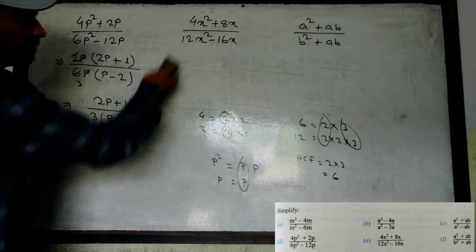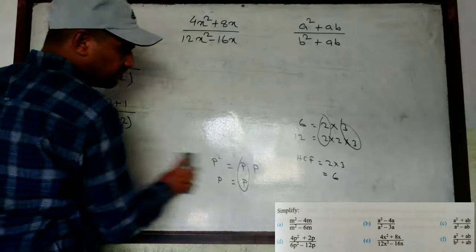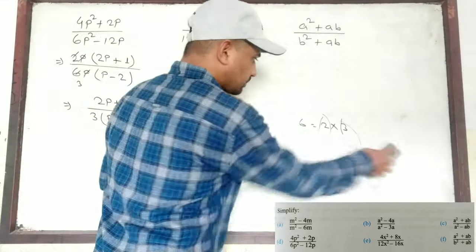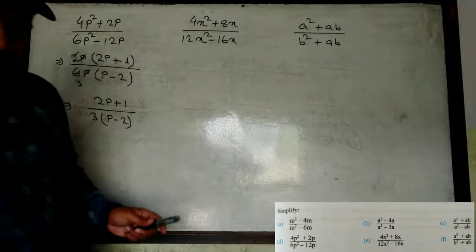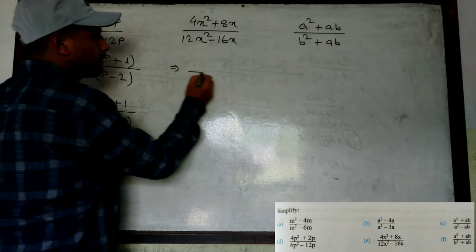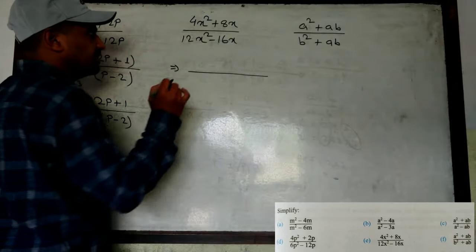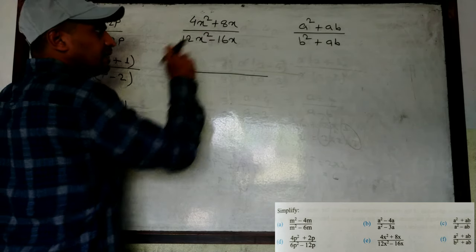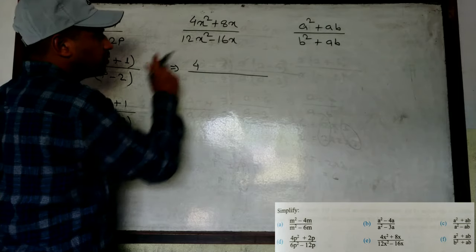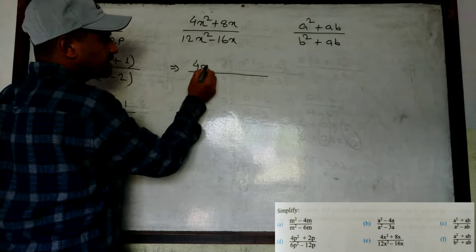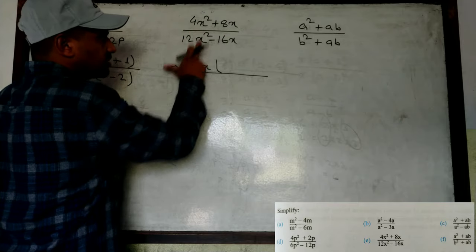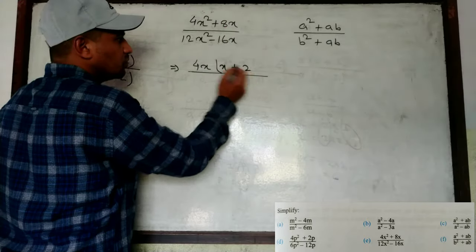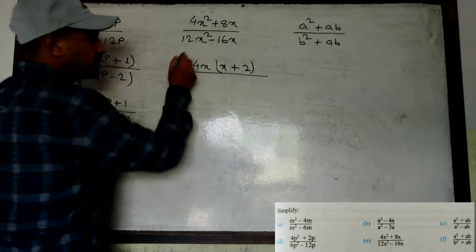Now I'm going to do this simplification. If you don't know how to take common, you can find the HCF and take common. Look at the next one. From 4 and 8, what is the common? 4×1 = 4, 4×2 = 8, so both are in the 4 table — common is 4. x² and x: common is x. So from 4x² + 8x, common is 4x. Remaining: from x², x common so remaining x. 4×something = 8, so 2. x already common.